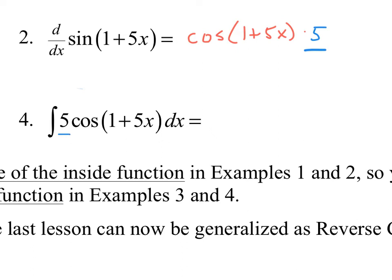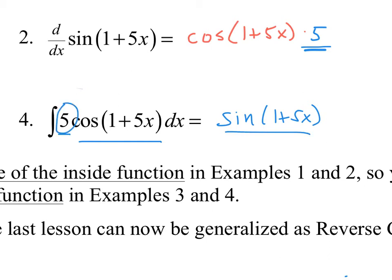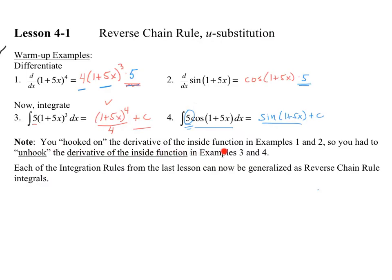On number 4, we have a similar situation. We have this 5 here, which is the same as the 5 off the chain. When I go in reverse, the antiderivative of cosine is sine; I leave the inside alone, but I need to account for this chain. If I took the derivative of this, I would have to multiply by 5 — and that 5 is right there, already accounted for. Each integration rule from the last lesson can now be generalized as a reverse chain rule integral. We unhook the derivative on 3 and 4 just as we hooked it on in 1 and 2.